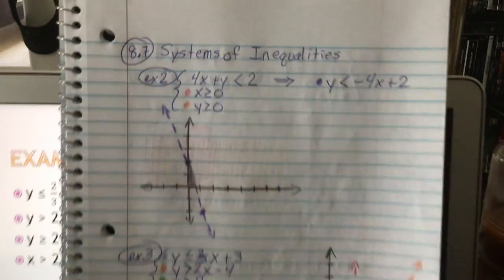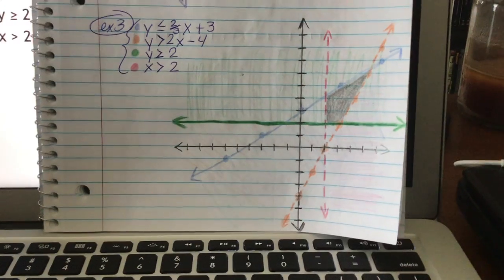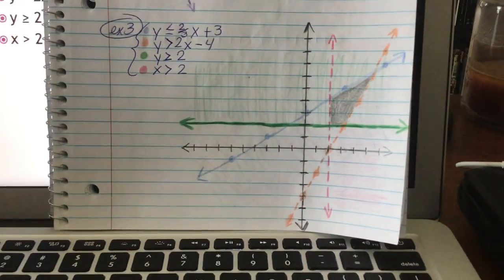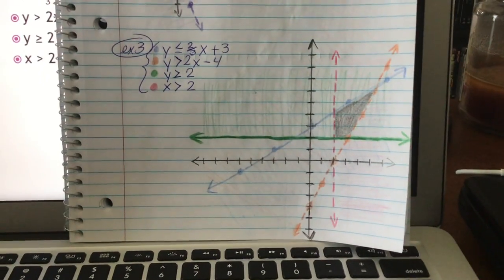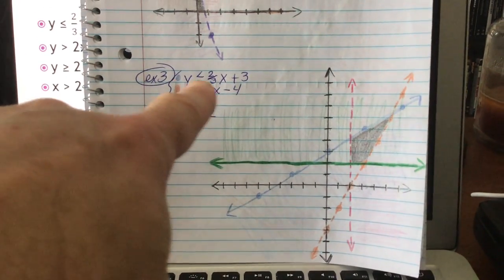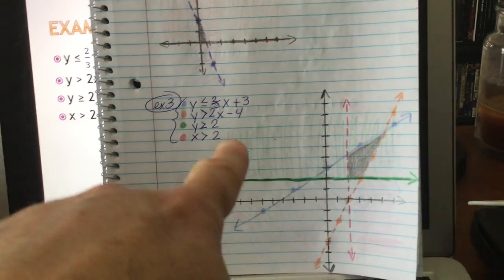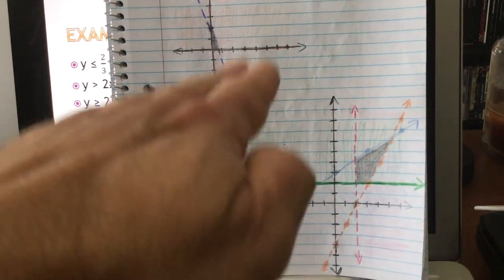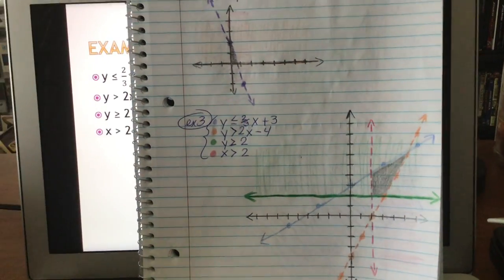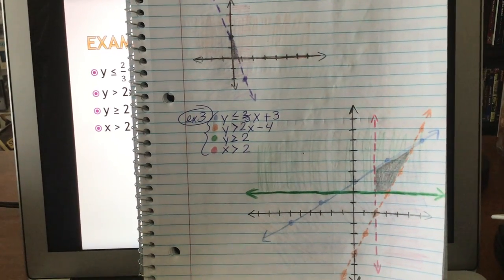Again, if you want to pause the video and try example three, you can. Here is example three. The good news with example three is these two were already in slope-intercept form. So I didn't have any of that work to do. So I graphed the first one in blue, starting at three, going up two and over three. There's the blue line. It's solid because it has or equal to, so it includes the line. And it is below it that I shade because that is where it's true. Zero, zero is true. Zero is indeed less than three.